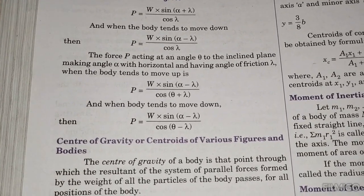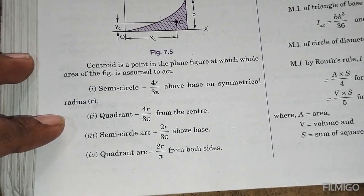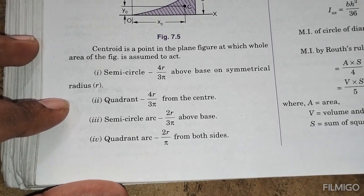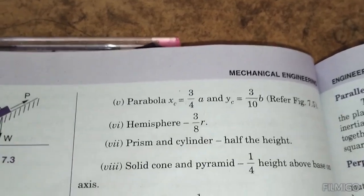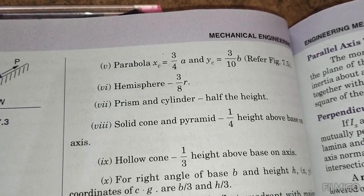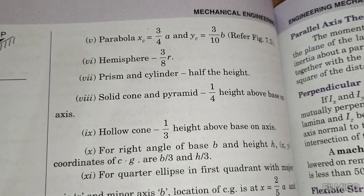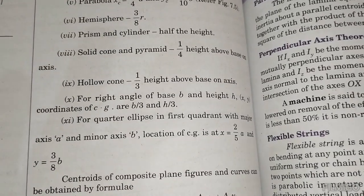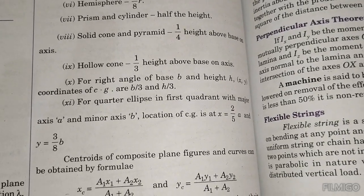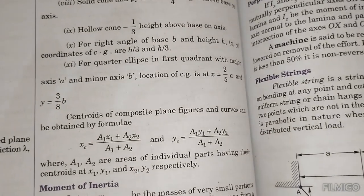Centroid of a semicircle is 4r divided by 3 pi; for a quarter circle it is 4r divided by 3 pi from both axes. For a parabola the centroid is at 3b by 4 and 3h by 10 respectively. For a prism and cylinder the centroid is at half the height. For a solid cone and pyramid it is at one quarter the height from the base; for a hollow cone it is one third the height. For a right-angle triangle the centroid coordinates are b by 3 and h by 3.